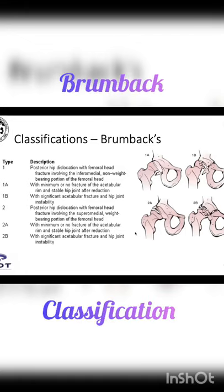The other classification is the Brombox classification, which associates femoral head fractures with the position of the hip dislocation. Type 1 is the posterior hip dislocation with femoral head fracture involving the inferior medial non-weight-bearing portion of the femoral head. In 1A, we have a minimum or no fracture of the acetabular posterior wall. In 1B, we have fracture of the posterior wall of the acetabulum and hip joint instability.